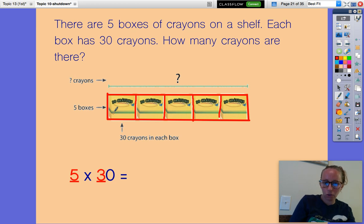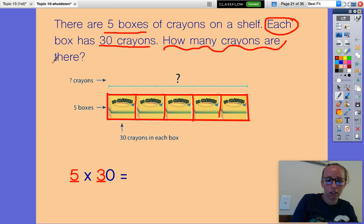If I know I have five equal parts with 30 in each, I know I'm going to be multiplying. There are five boxes, five groups. In each box there's 30 crayons. How many crayons are there? The answer can't be 30 crayons because there's 30 crayons in just one box.